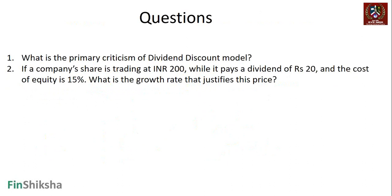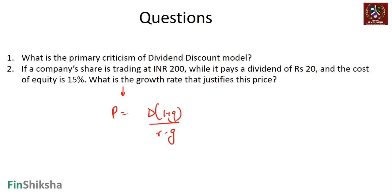Two closing questions: First, what is the primary criticism of the dividend discount model? Second, if a company's share trades at ₹200 while it pays a dividend of ₹20 and the cost of equity is 15%, what growth rate justifies this price? You can solve using P = D×(1+G)/(R−G) algebraically, or set up the formula and use Goal Seek.